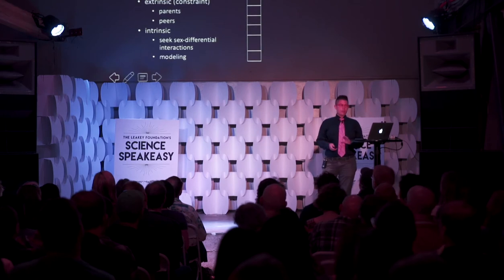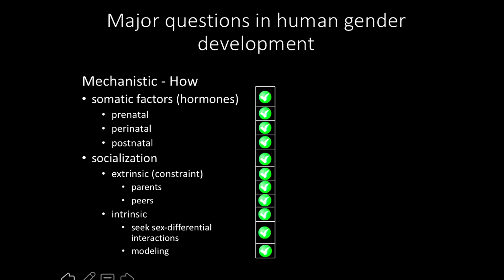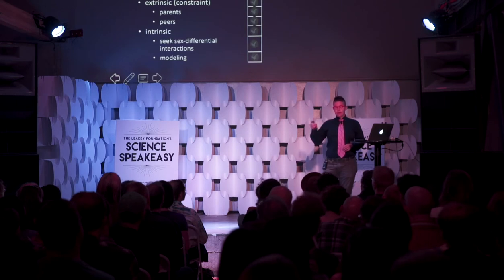I have good news: all of you are right. There are data in support of all these mechanisms being important for the development of human sex-typed behavior. To some degree you could pick your poison here. If you think socialization drives gender development, you can dismiss some hormonal data as derived from clinical populations. If you think somatic factors are really important, you can dismiss the socialization data as correlational — maybe some are responses to children's gendered behavior, not causes of it. And people go around and around on this question.